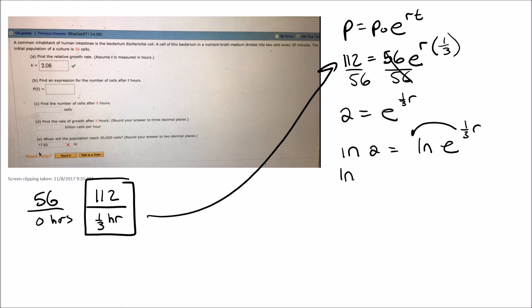We bring that down in front: the ln of 2 equals one third r times the ln of e. But the ln of e is just 1, so that's just going to disappear there. And then to get r by itself, all I need to do is multiply both sides by 3, because then we'll be left with r equals 3 ln of 2.